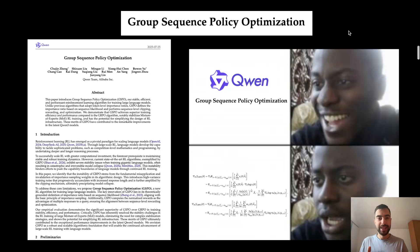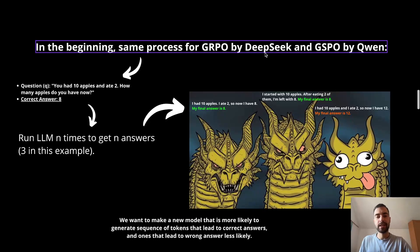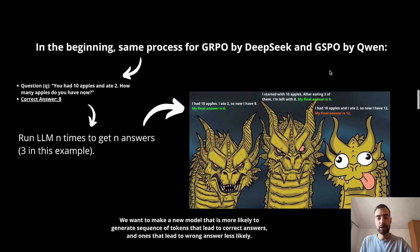This is how QUEN trains its reasoning models to match performance of DeepSeek R1 and O3. I spent 9 hours preparing this video and you will understand everything. You will understand both GRPO by DeepSeek R1 and GSPO by QUEN because they are very similar.